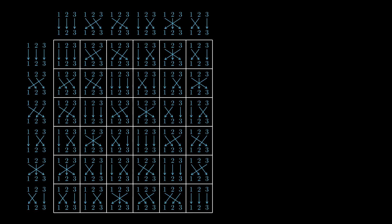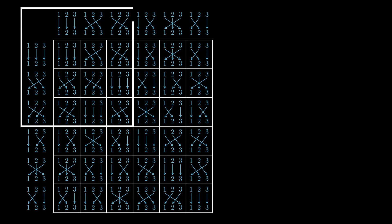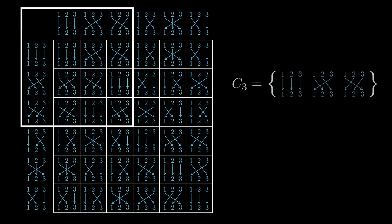In the two examples we've seen so far, our permutation group consisted of all bijections from x to itself, but it's also possible for a permutation group to contain only some of these bijections. For example, looking at our multiplication table for S3, we notice that just these first three bijections, which cycle the three elements of x, are closed under composition and inversion, and so they form a permutation group of size 3. The standard name for this permutation group is the cyclic group of order 3, or C3 for short. Since C3 is a subset of S3, which is itself a permutation group, we call it a subgroup of S3.